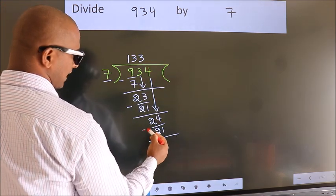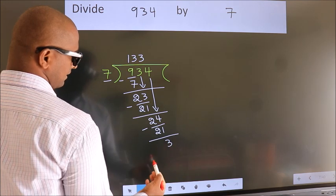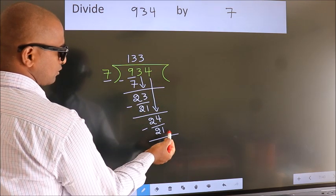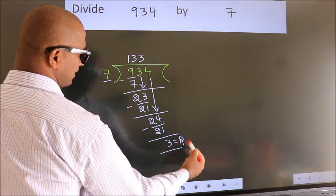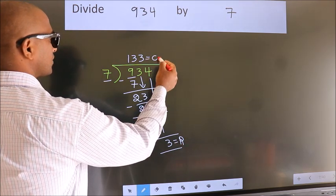Now we subtract. We get 3. No more numbers to bring down. So we stop here. This is our remainder. This is our quotient.